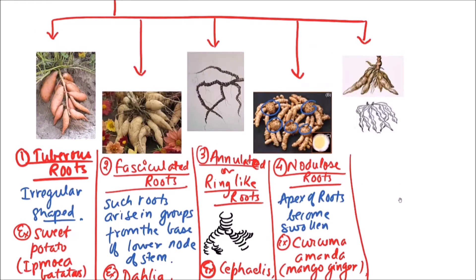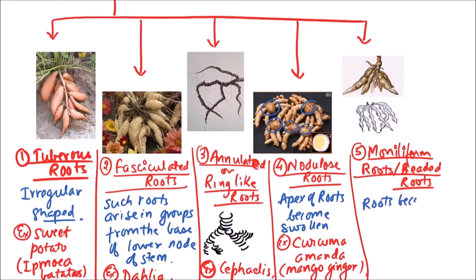And now the last category of this group storage under the modifications of adventitious roots is moniliform roots. Moniliform roots are basically beaded roots, beaded appearance. In this condition, roots become swollen at various places.